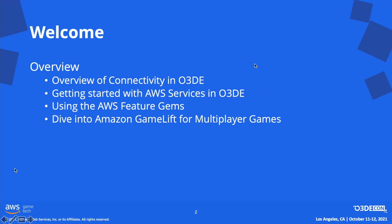We have several aims for this talk. First, we aim to give you an overview of the Open3D Engine pieces that focus on using the cloud and specifically AWS. Secondly, we aim to give you a brief overview of how you can set up and utilize AWS in Open3D Engine. Thirdly, we aim to highlight some of the AWS feature gems that provide pre-built game and simulation features powered by the cloud. And finally, we want to highlight how you can use Amazon GameLift to host and scale your multiplayer Open3D Engine games in the cloud. We'd like you to leave with a sense of how you could begin to leverage AWS services in your usage of the Open3D Engine, and ideally aim to encourage you to engage and contribute to Open3D Engine in this space.